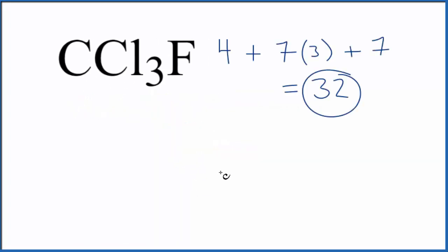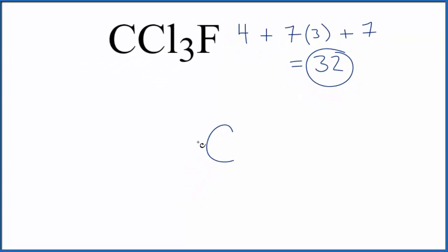So we put the least electronegative element in the center, that's the carbon, and then we'll put the chlorines, all three of them, and the fluorine around that carbon. We have 32 valence electrons for this CCl3F Lewis structure.